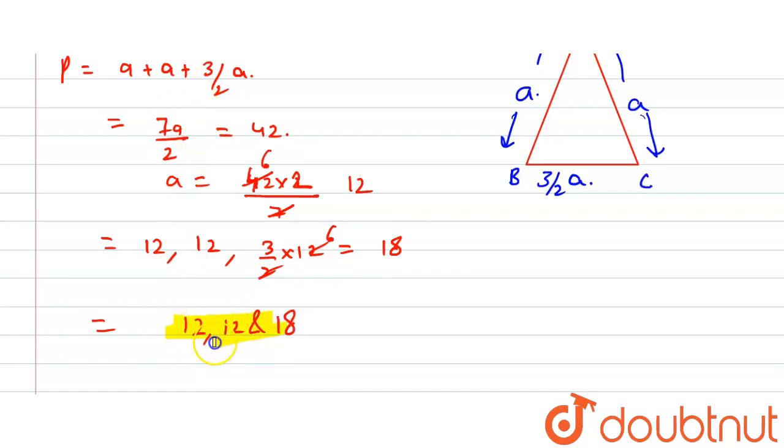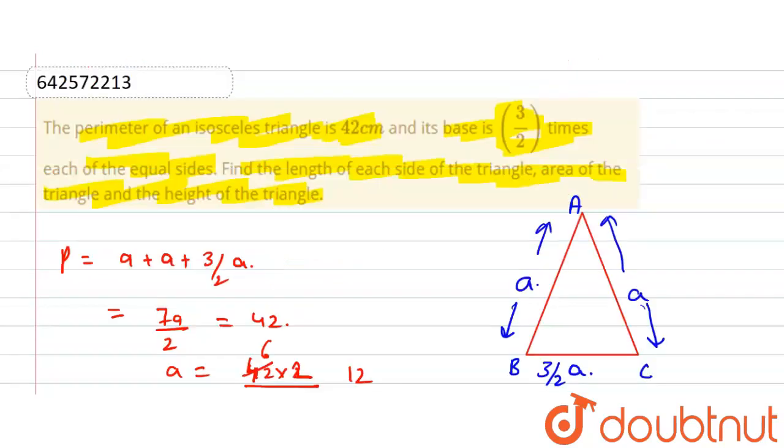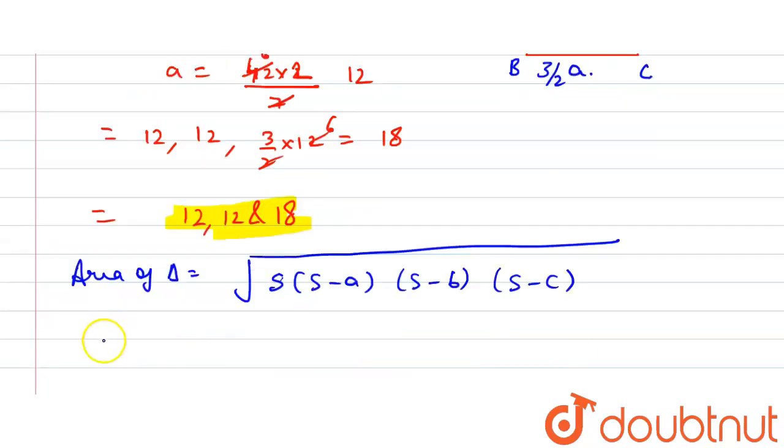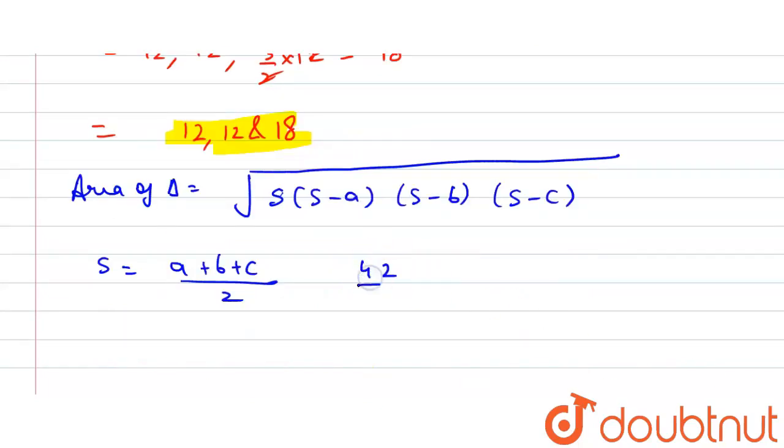Now we have to find the area of the triangle. Area of a triangle is equal to Heron's formula, that is equal to square root of S times S minus A times S minus B times S minus C. So here S is equal to semi-perimeter, that is equal to A plus B plus C by 2. Here perimeter is 42, so divided by 2, that is equal to 21 cm. Now put the values in the formula.